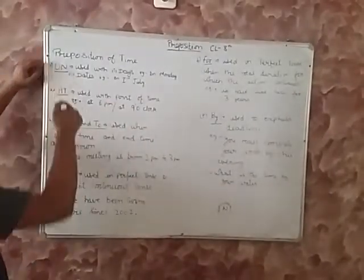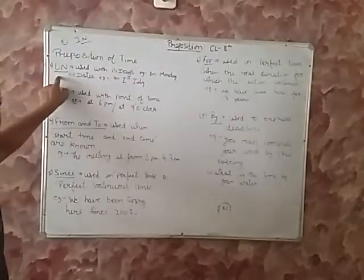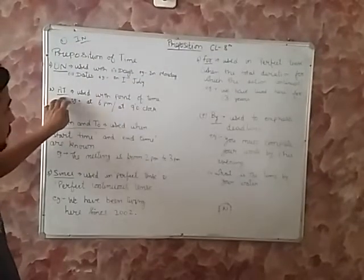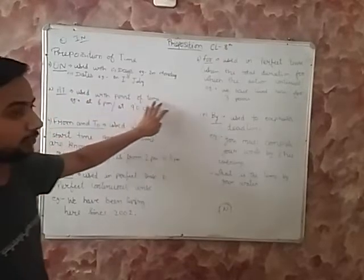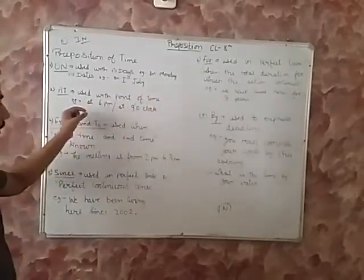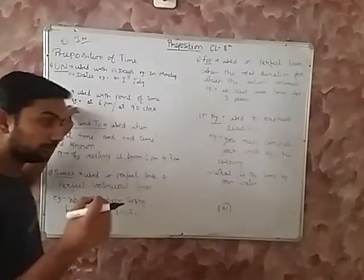Third, the first preposition we have done was in. Second was on. Now the third is at. Where we use at. It is used with point of time. Point of time. Particular point of time. If you are giving some fixed time.